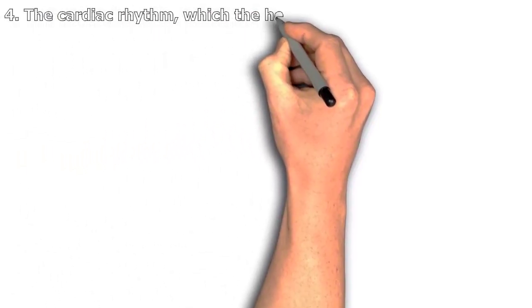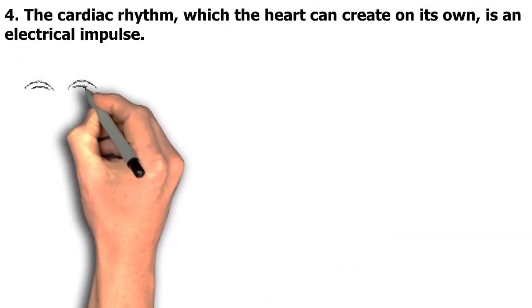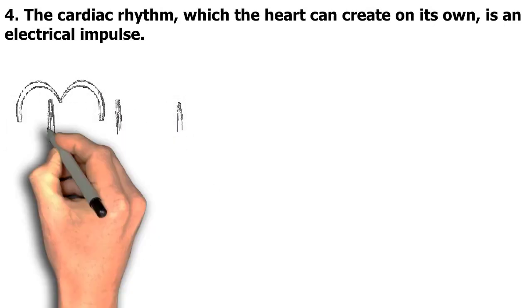4. The cardiac rhythm, which the heart can create on its own, is an electrical impulse. This electrical activity controls how the heart muscle contracts, causing the blood to be pushed through the body.